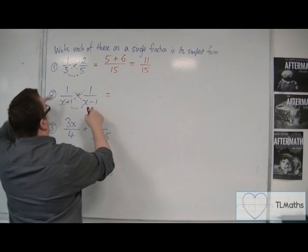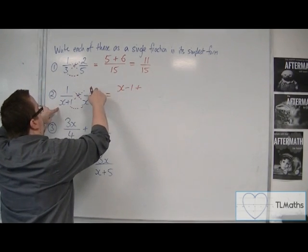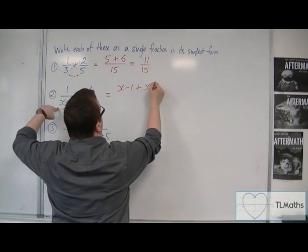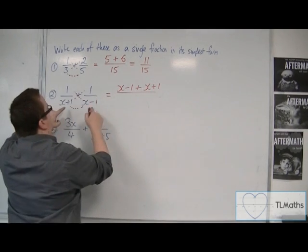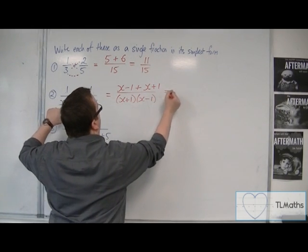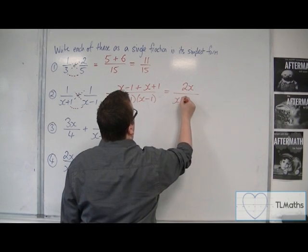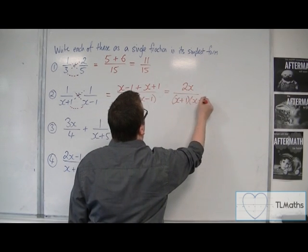So we've got 1 lot of x minus 1 plus 1 times x plus 1 over x plus 1 times x minus 1. So the numerator can be simplified to just 2x. And so that's 2x over x plus 1, x minus 1.